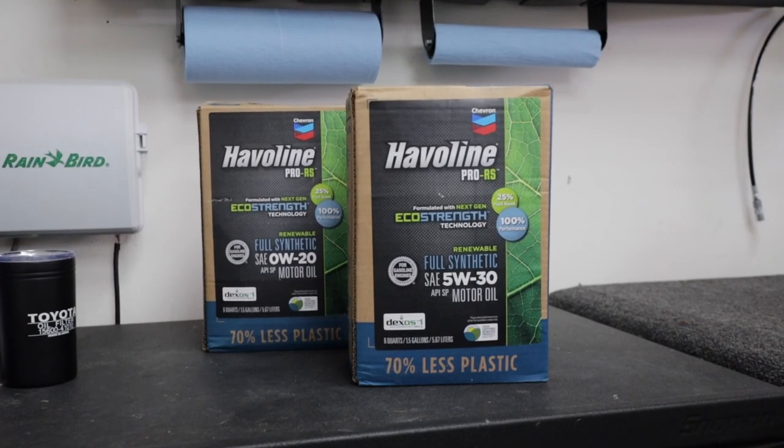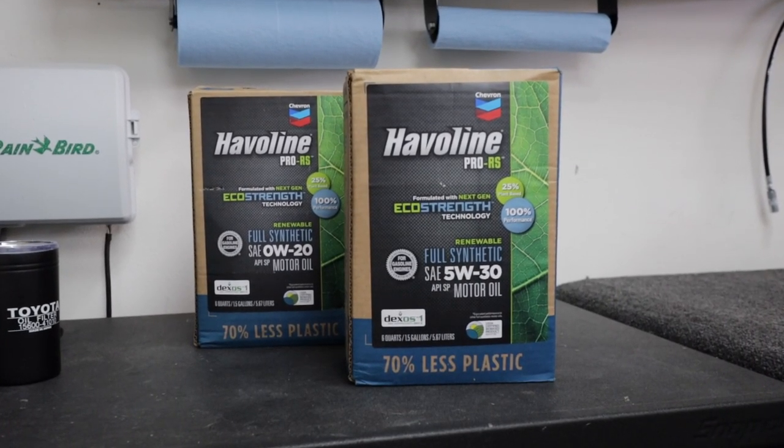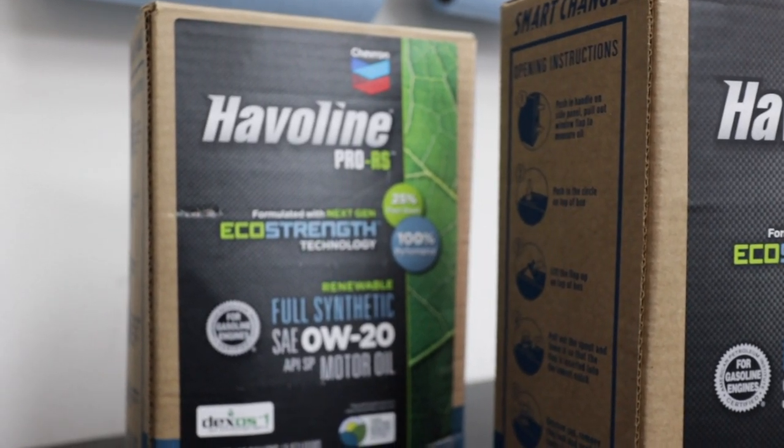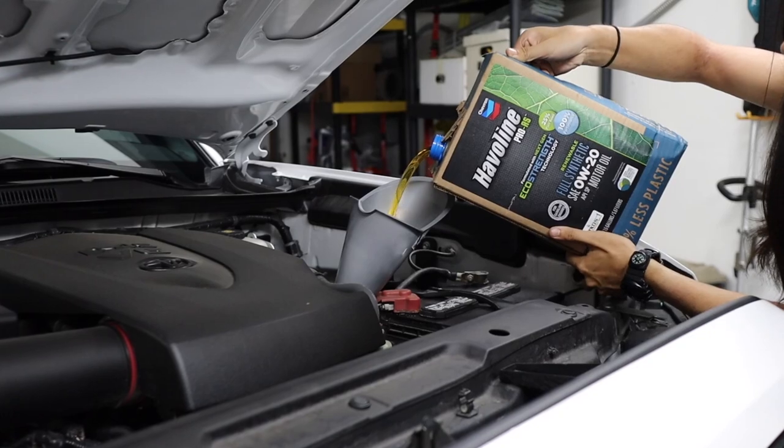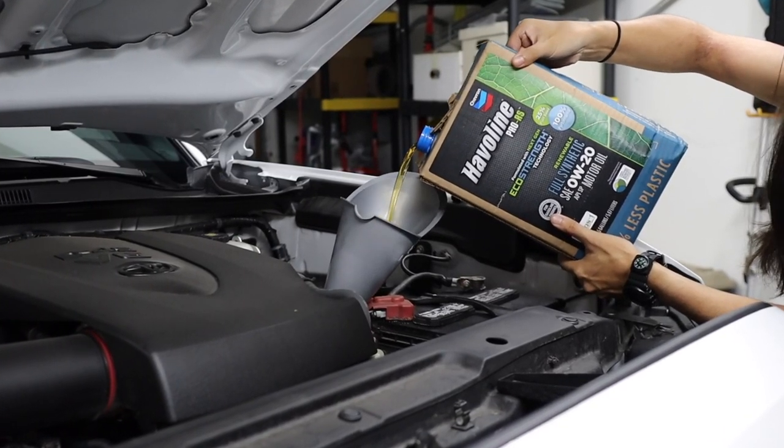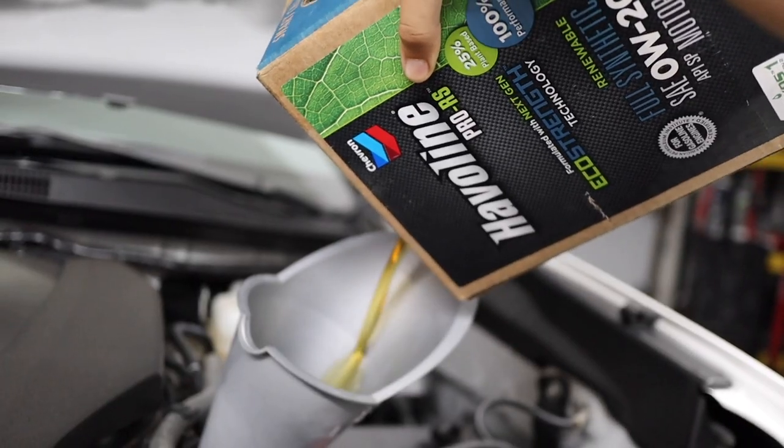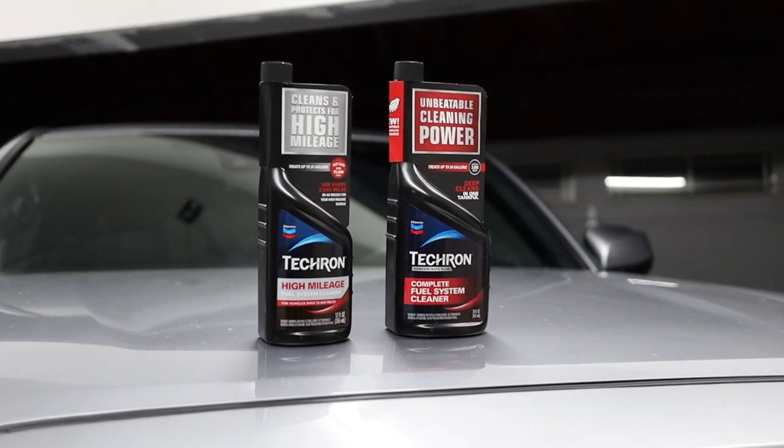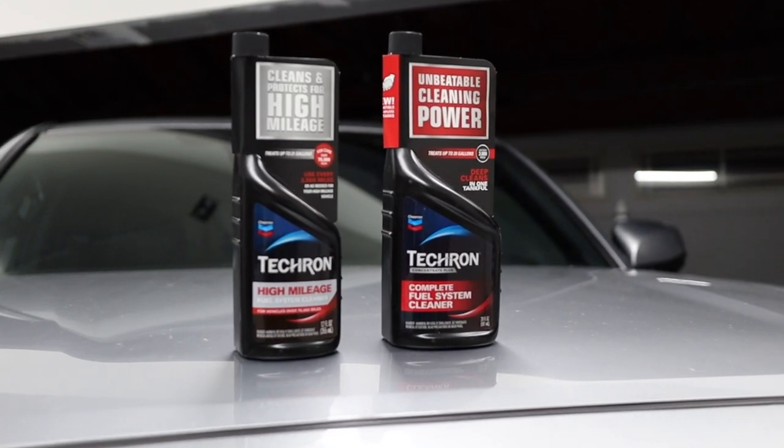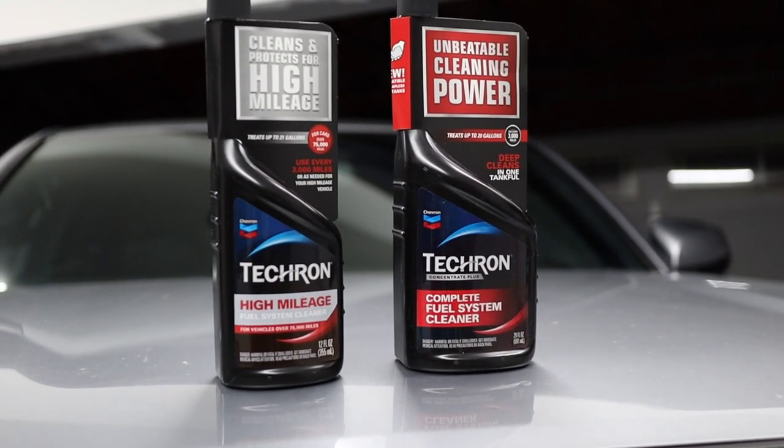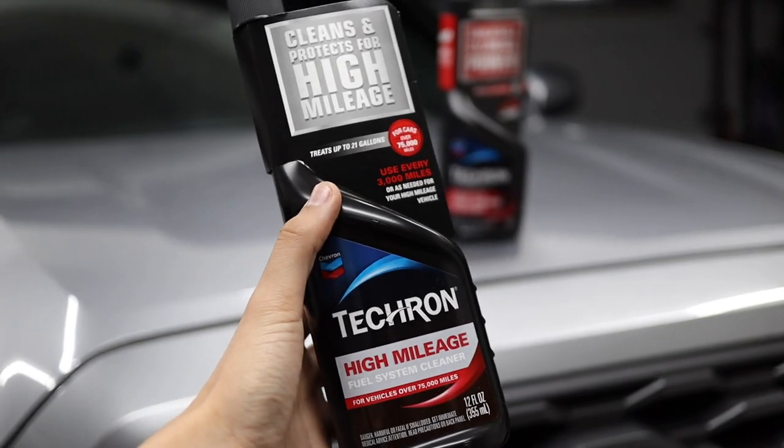Now, with all that being said, I do want to say that my friends at Haviland reached out to me when I hit a hundred thousand subscribers and offered to do a giveaway. And I wanted to spend this portion of the video to explain that if you're interested, because it's actually a really great prize. They are giving away four boxes of Haviland Pro RS, which if you have the V6 Tacoma, that's basically like enough oil for four oil changes, considering the engine takes about six quarts of oil and each box is six quarts. And also six bottles of Tecron Complete Fuel System Cleaner or six bottles of Tecron High Mileage Fuel System Cleaner, plus a bunch of other goodies.